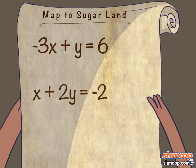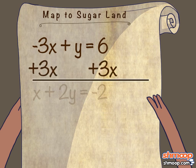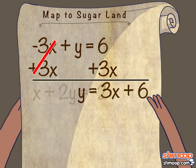Here's the scrap of paper your friend gave you. We'll tackle the equations by changing them to slope-intercept form first. Let's start with the top equation: negative 3x plus y equals 6. You can do this one without sugar and caffeine coursing through your veins. Just add 3x to both sides. Doing that, we see that y equals 3x plus 6.